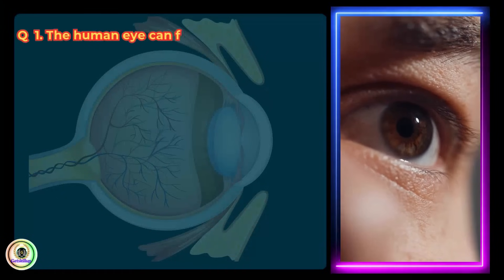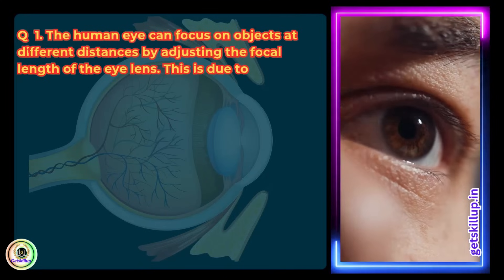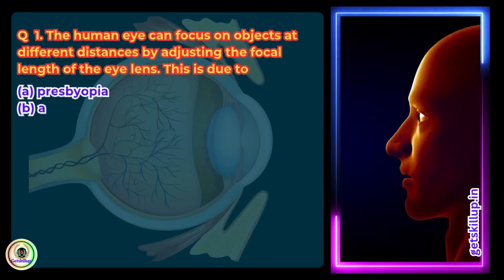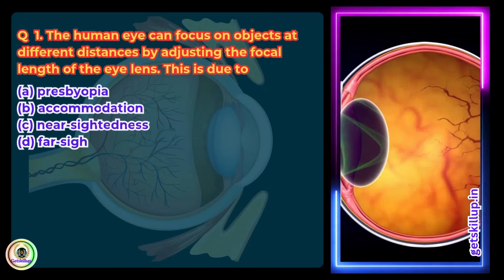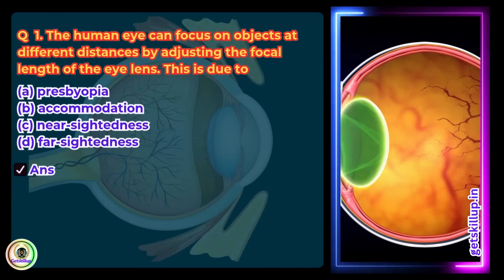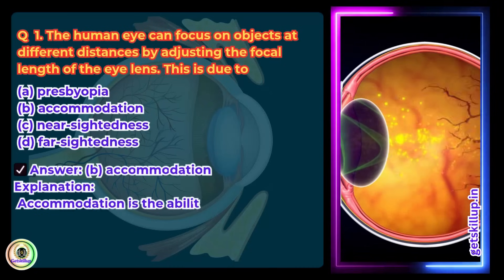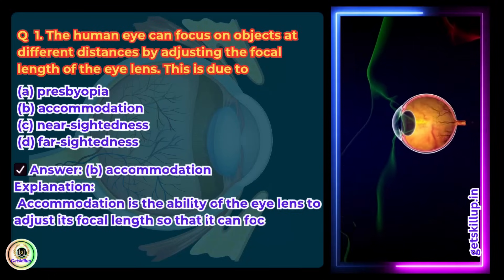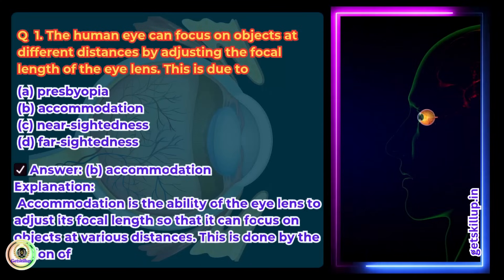Question 1. The human eye can focus on objects at different distances by adjusting the focal length of the eye lens. This is due to: A. Presbyopia, B. Accommodation, C. Nearsightedness, D. Farsightedness. Answer: B. Accommodation. Explanation: Accommodation is the ability of the eye lens to adjust its focal length so that it can focus on objects at various distances. This is done by the action of ciliary muscles.